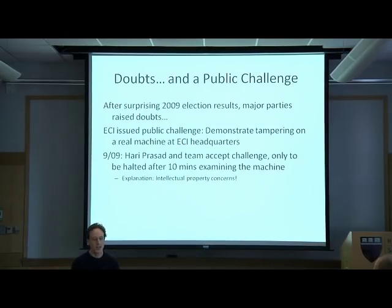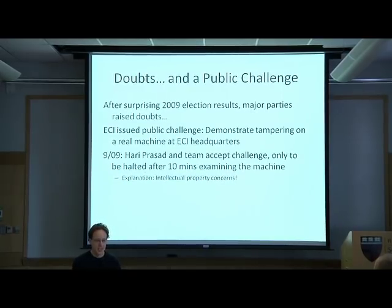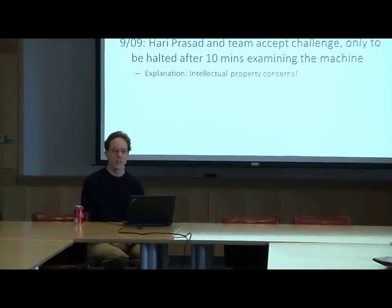Nonetheless, they never allowed an independent security review of the machines. This came to a head in 2009 when the parliamentary election had surprising results that disagreed quite a bit with the exit polls — something that might sound familiar to an American audience. Major political parties started raising doubts about the machines' security. The Election Commission issued a challenge: anyone can come to our offices and demonstrate tampering on a real machine in front of us.